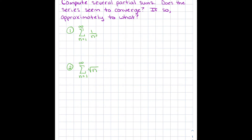Looking at the first series, s₁ is the first term, so 1 over 1 squared equals 1. The second partial sum is 1 plus 1/4, which is 1.25. The third partial sum is 1 plus 1/4 plus 1/9. I'm going to start letting my calculator do the rest of this — that gives 1.3611.